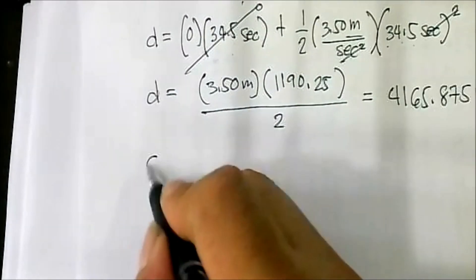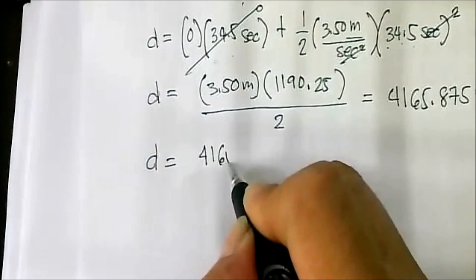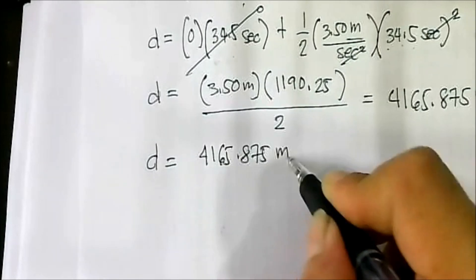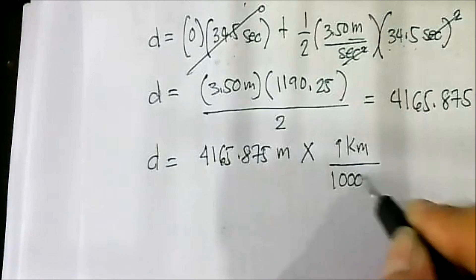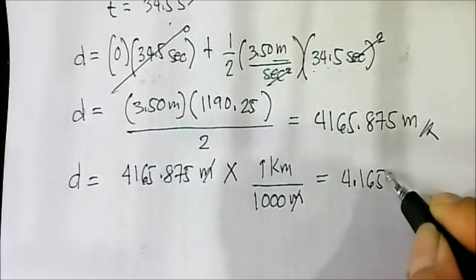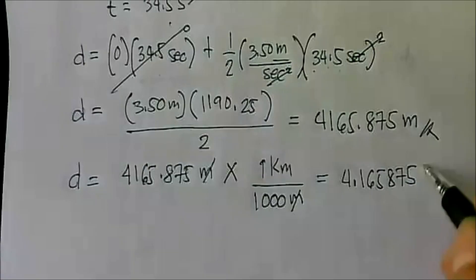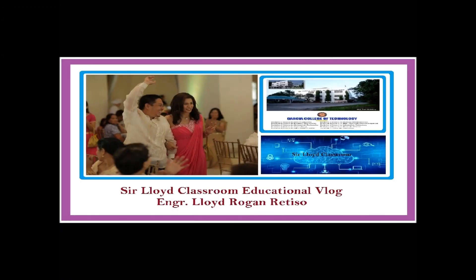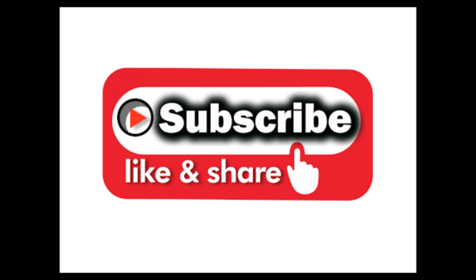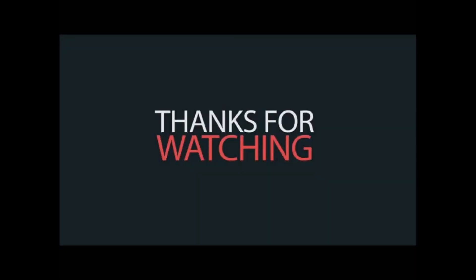Converting to kilometers: D equals 4,165.875 meters times 1 kilometer over 1,000 meters. Meters cancel out, giving a final answer of 4.165875 kilometers. I hope you understood the discussion. Thank you very much.